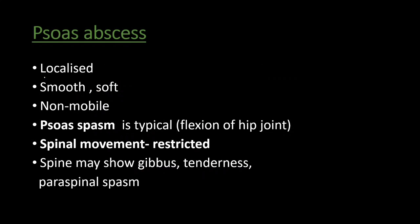Psoas abscess is usually localized, smooth, and soft. It is non-mobile. Psoas spasm may be seen, which is typical, along with flexion of the hip joint. Spinal movement is restricted, and the spine may show gibbus, tenderness, and paraspinal spasm. These are the important differential diagnoses of mass in the right iliac fossa.